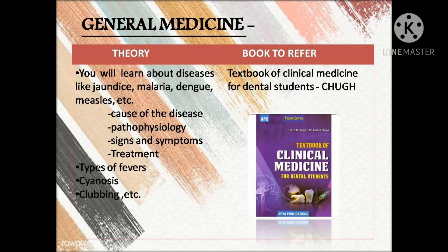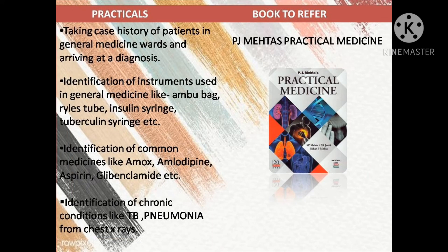Coming to the medical subject, general medicine — GM — here you will learn about various diseases such as malaria, dengue, pneumonia, and jaundice. You will learn about the cause of the disease, its pathophysiology, signs and symptoms, and the treatment required. You will also learn about various types of fever. The book to be referred for the theory of GM is Textbook of Clinical Medicine for Dental Students — a very good book with everything well explained in simple words.